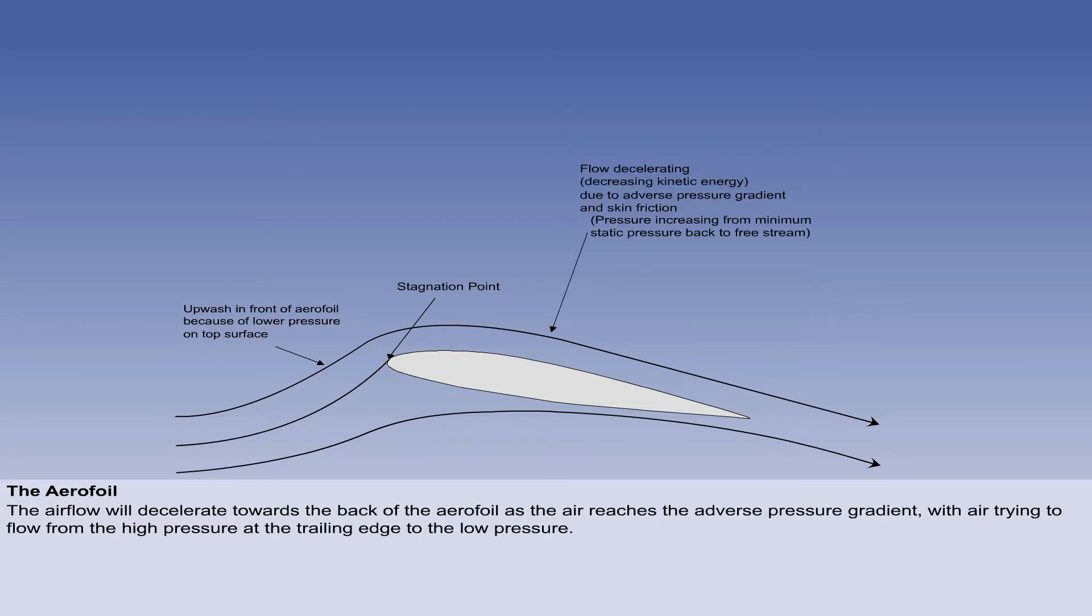As the air flows back over the aerofoil, it will tend to slow down in accordance with the basic principles, flowing against the adverse pressure gradient as the higher pressure air below the aerofoil tries to go from high to low pressure, that is, forward from the trailing edge to the low pressure area on top.